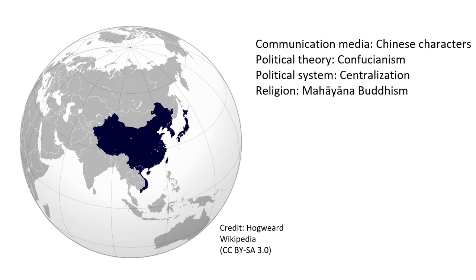If you go to Wikipedia, you'll find this map of the Chinese character sphere or 'Sinosphere.' Even though I don't really agree with it, there are four key elements shared among these countries — not only Chinese characters, but also the political theory of Confucianism, an ancient philosophical tradition from more than 2,000 years ago.